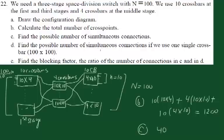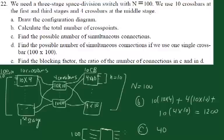Part D asks for the possible number of simultaneous connections if we use one single crossbar — a single crossbar of one hundred by one hundred. With a single crossbar, you have one hundred inputs and one hundred outputs, so each input has a guaranteed path with no waiting. The number of simultaneous connections is 100.